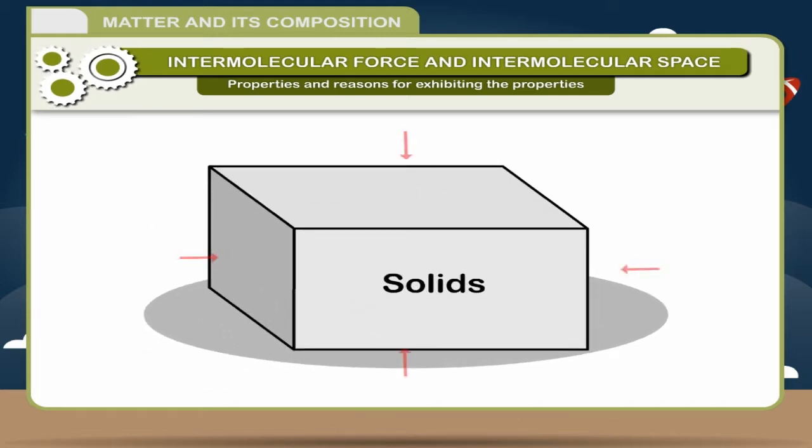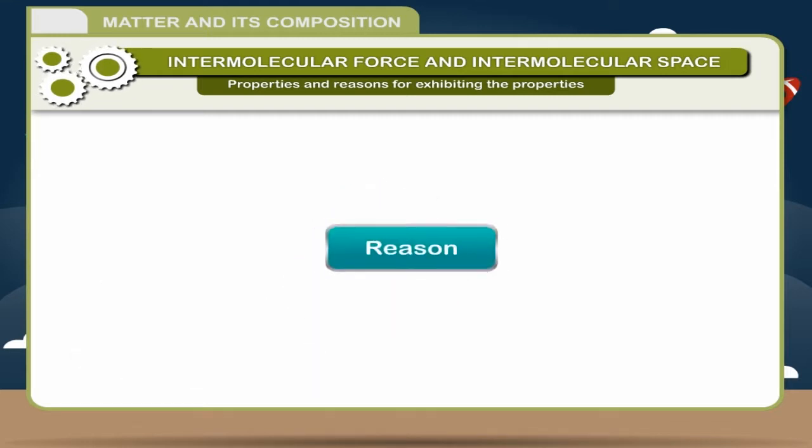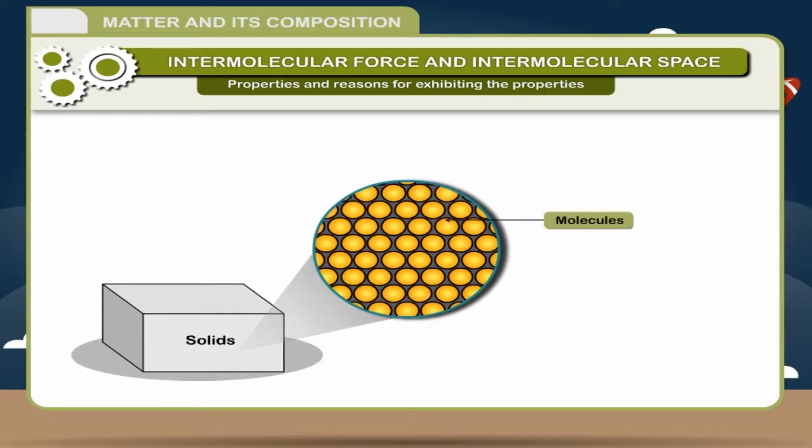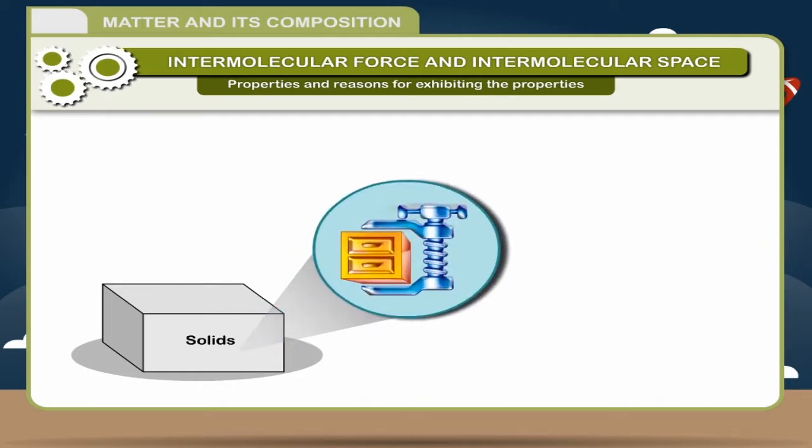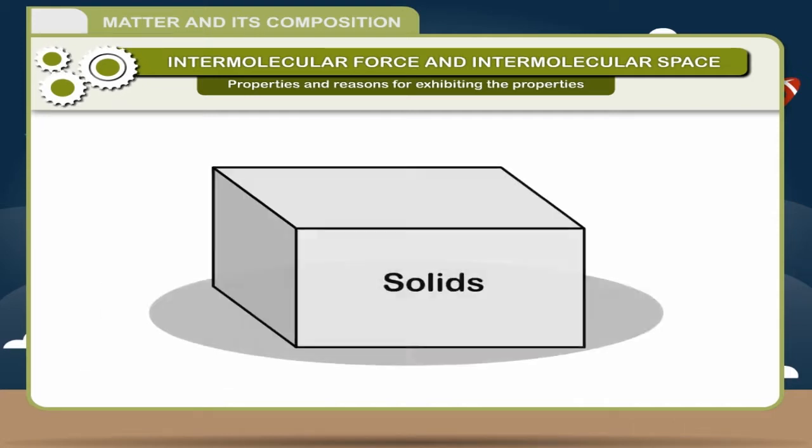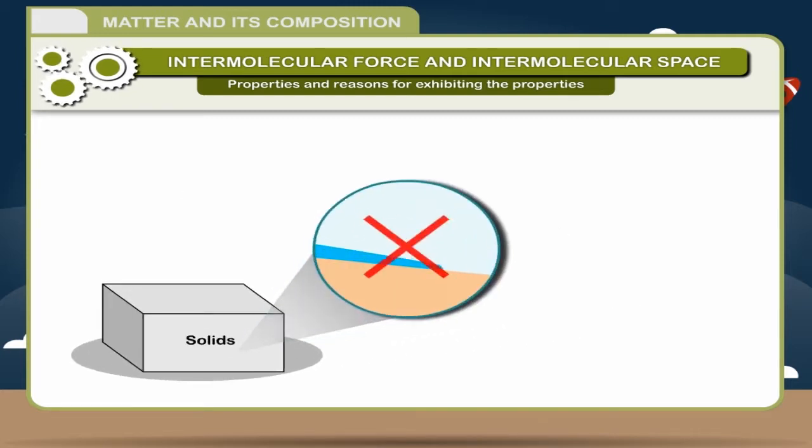Solids cannot flow. Reason: Due to the strong intermolecular forces, they cannot flow. Solids are incompressible. Reason: As there is no place left in between the molecules, they cannot move closer to each other. As a result, solids are incompressible. Solids can have any number of free surfaces depending on their shape. Reason: Solids are those substances which have a definite shape and volume. They are non-compressible, cannot flow and therefore can have any number of free surfaces.